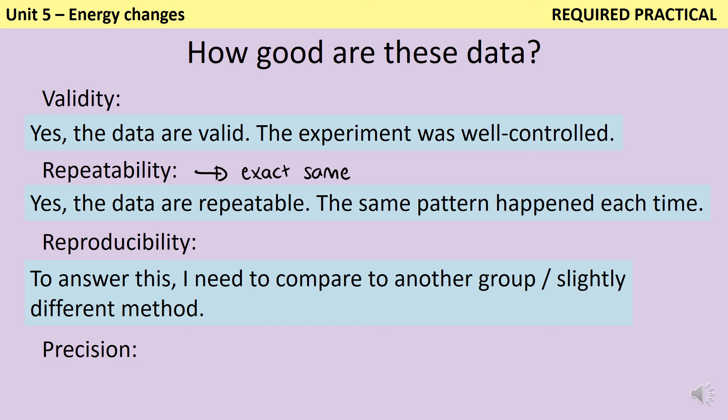Finally, we need to look at the precision. So precision is to do with how finely graded are my results. So in this investigation, I used a thermometer that had a resolution of 1 degree C. In other words, I could tell whether something was 20 degrees, or 19, or 21, but I couldn't say, oh, this temperature is 20.1 degrees C. In order to improve that precision, I would need to use a thermometer with a higher resolution, and chances are this would require me to use a digital thermometer instead.